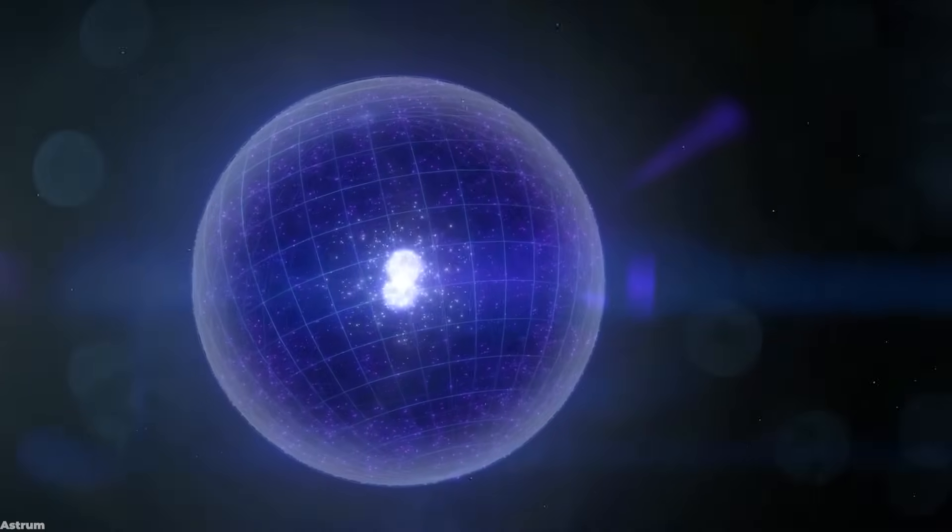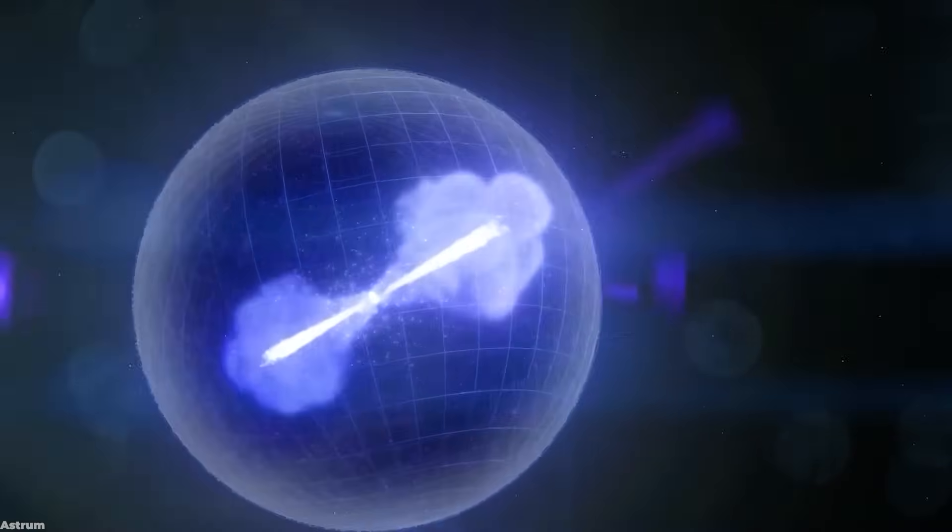The second way they can form is through the direct collapse of gas. This process leads to the creation of massive black holes, ranging from one thousand to even one hundred thousand times the mass of our sun.